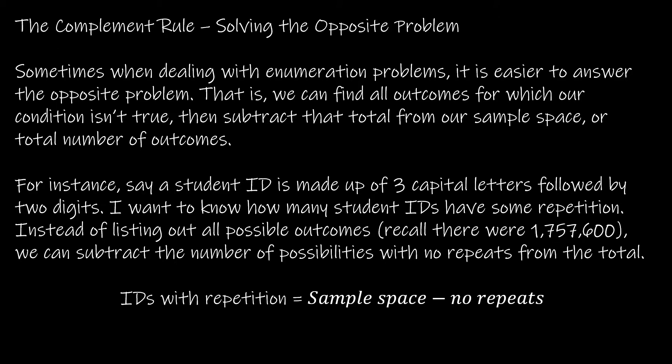I want to start by looking at the complement rule, or the opposite problem. This is not covered in your textbook but it's an important strategy to know, because quite often it is far easier to use this strategy than to find the outcome using the addition rule or product rule. What we do with the complement rule is find the number of ways in which a condition isn't true, and subtract that from the total sample space.